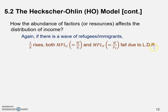Both the marginal product of labor in cloth and the marginal product of labor in food fall, due to the law of diminishing returns — or diminishing returns to labor in this case. In both cloth and food production, more labor is used relative to capital, so labor becomes less and less productive. That's why we know these two marginal products decrease.